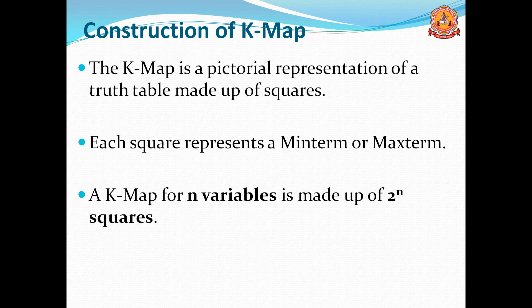The K-map is a pictorial representation of a truth table made up of squares or cells. Each square represents a min term or max term. A K-map of n variables is made up of 2^n squares. For 2 variables, 4 squares are required; for 3 variables, 8 squares; for 4 variables, 16 squares.